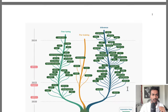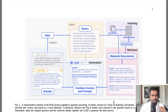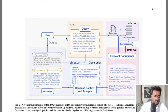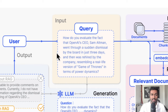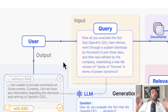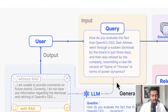We're going to walk through a diagram step by step. First, we have a user who inputs a specific query: 'How do you evaluate the fact that OpenAI's CEO, Sam Altman, went through a sudden dismissal by the board in just three days, and then was rehired by the company, resembling a real-life version of Game of Thrones in terms of power dynamics?' That is the question the user inputs.